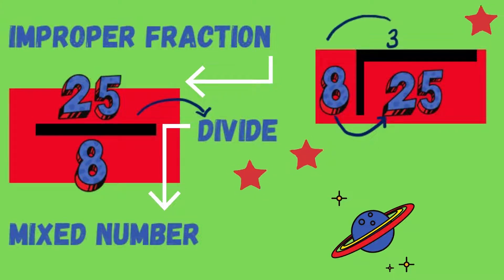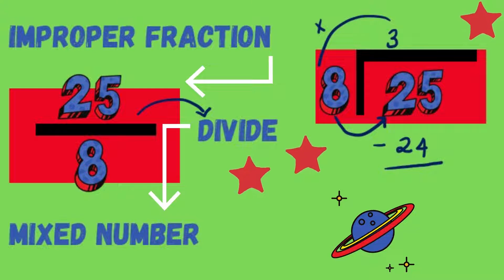We multiply the three with eight, and this equals 24. We take the 24 and subtract it from the 25. 25 minus 24 gives us a remainder of one. The three whole parts becomes the whole number within our mixed number. The remainder of one becomes the numerator, and the denominator stays unchanged.